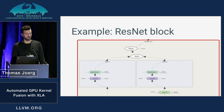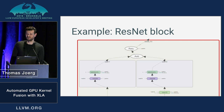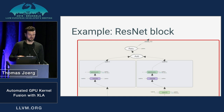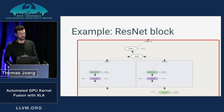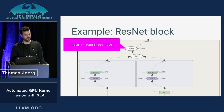Throughout this talk, I'm going to use a running example: the ResNet model used for image classification. It's a fairly popular convolutional neural network, and I'll explain how this model is being compiled using XLA. If you zoom in far enough, you'll see that the ResNet model is made up from blocks, and you'll see the individual TensorFlow ops in that block.